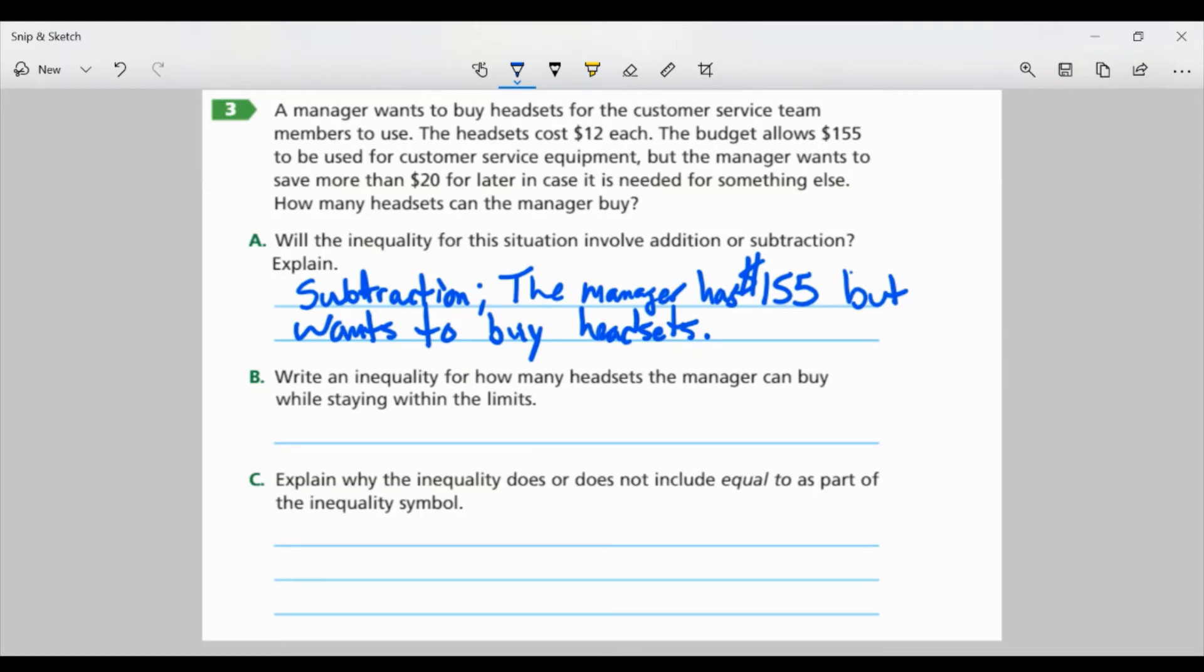Part B. Write an inequality for how many headsets the manager can buy while staying within the limits. Well, I know the manager has $155, and we're going to get headsets that are $12 each. So, we're taking away $12 per headset. And they want to save more than $20. The manager wants to have more or greater than $20 for later. So this is an inequality that fits this situation. $155 minus $12 per headset is greater than $20.